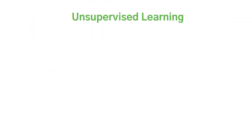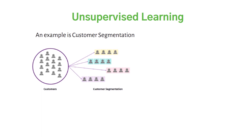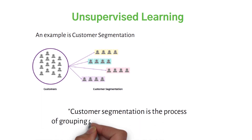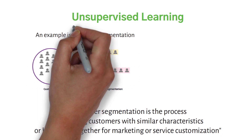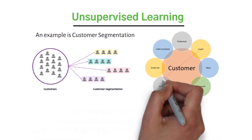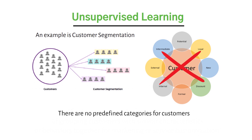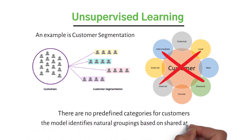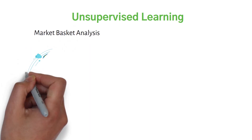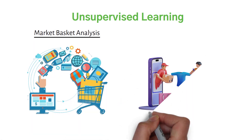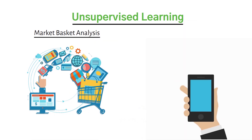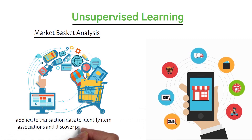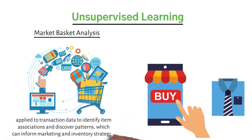Unsupervised learning. An example is customer segmentation — the process of grouping customers with similar characteristics or behaviors together for marketing or service customization. Unsupervised learning is chosen because there are no predefined categories for customers; instead, the model identifies natural groupings based on shared attributes. Another example is market basket analysis, which helps retailers understand which products are often purchased together, discovering patterns to inform marketing and inventory strategies.